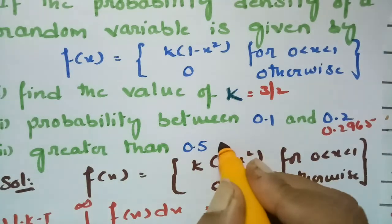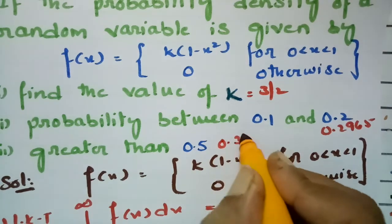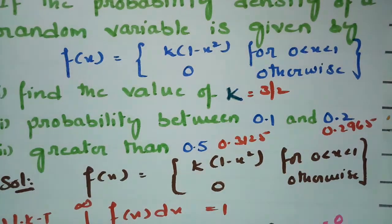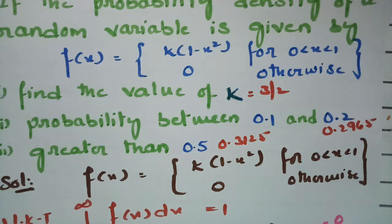To summarize: we found k = 3/2, the probability between 0.1 and 0.2 is 0.2965, and the probability greater than 0.5 is 0.3125. Thank you so much for watching. I'll be uploading many more problems related to this series — please share it with your friends and subscribe to this channel.